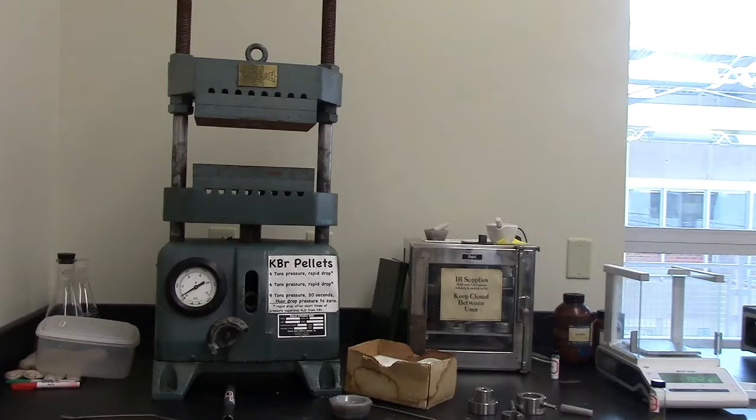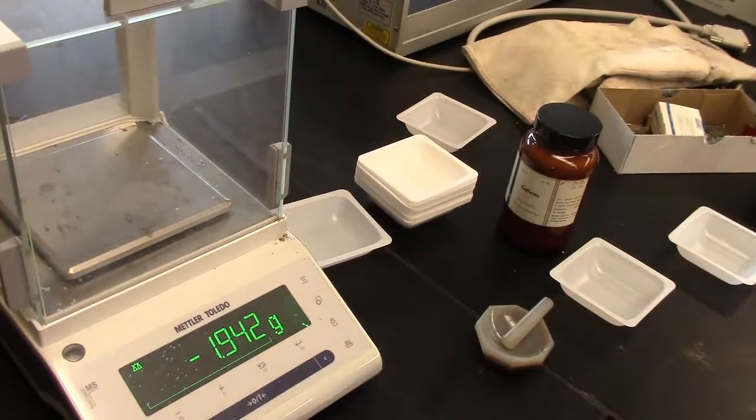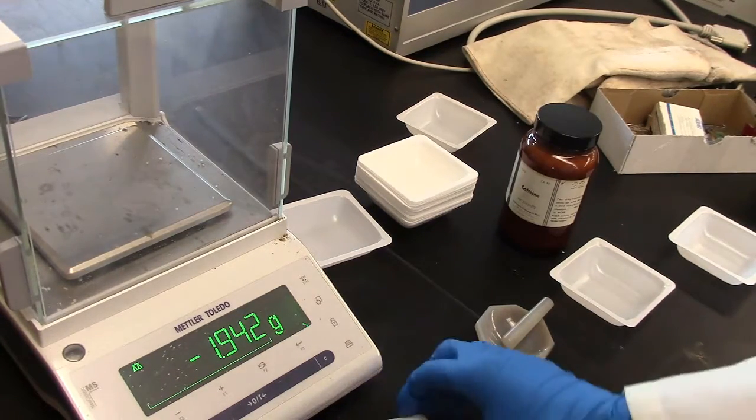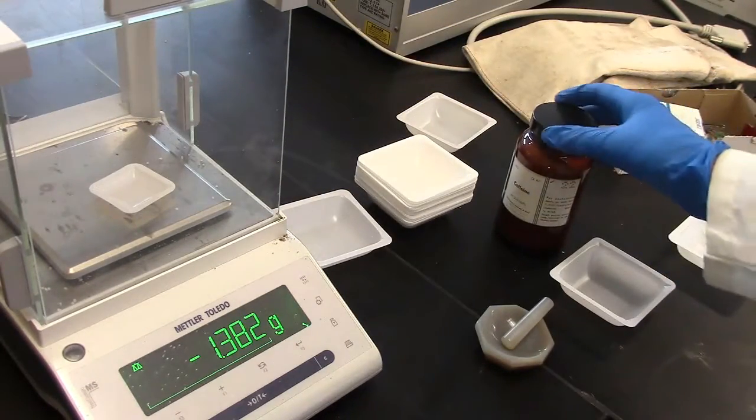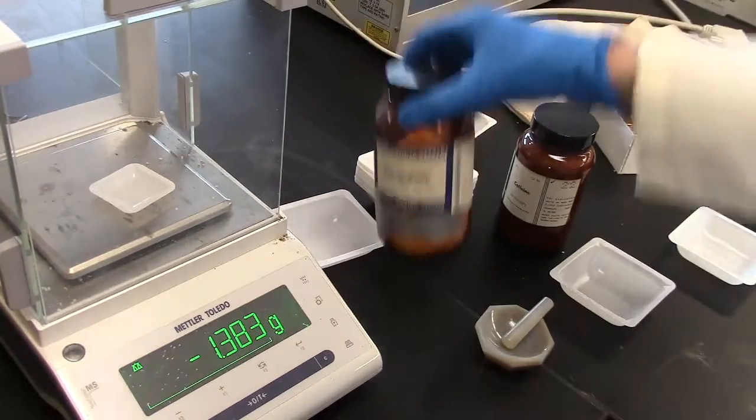The first thing we'll need to do in order to use the IR is to make a KBR pellet of our substance. The first thing we'll need to do in order to make a KBR pellet is to weigh out approximately 100 to 200 milligrams of potassium bromide or KBR.